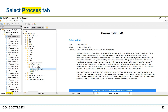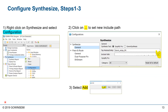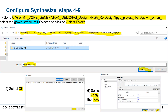We've added our design files and constraint files to the design. We need to process these by clicking on the Process tab. In the Process tab, we can configure our synthesis tool. Right-click on Synthesize — the default tool is Simplify Pro, though the Gowen synthesis tool is also available. We add our path to point to the Gowen EMPU M1 folder under the source directory, then click OK, Apply, and OK again.